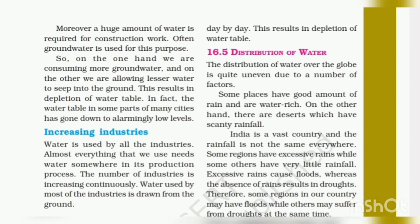This results in the depletion of the water table, and the water table in some parts of many cities has gone down to alarmingly low levels. Now we have another topic: increasing industries. Water is used by almost all industries — nearly everything that we use needs water somewhere in its production process. The number of industries is increasing continuously, and the water used by most industries is drawn from the ground.